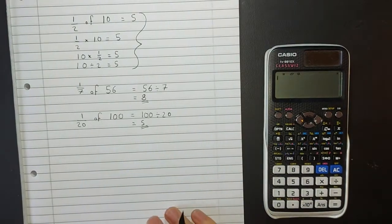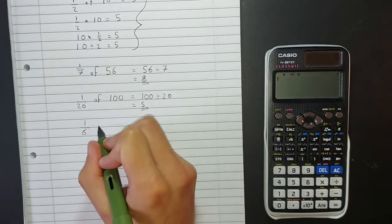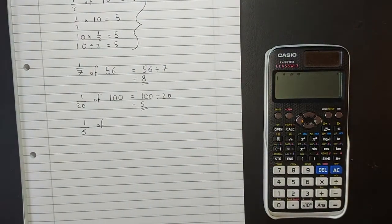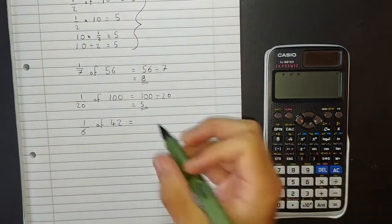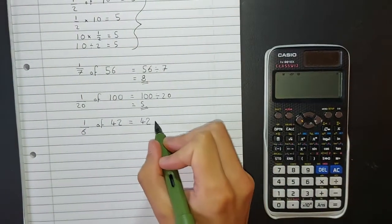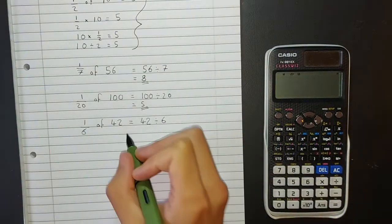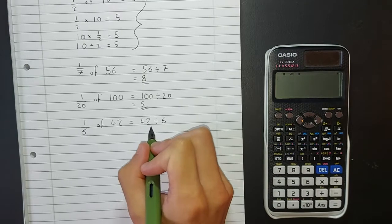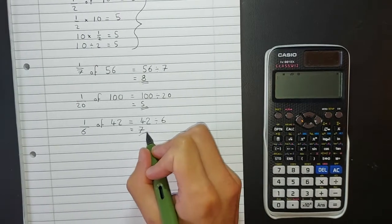One last example. If I asked you to find one-sixth of forty-two, well that's going to be the same as taking forty-two and splitting it into sixths, so dividing it by six. Forty-two divided by six would give us an answer of seven.